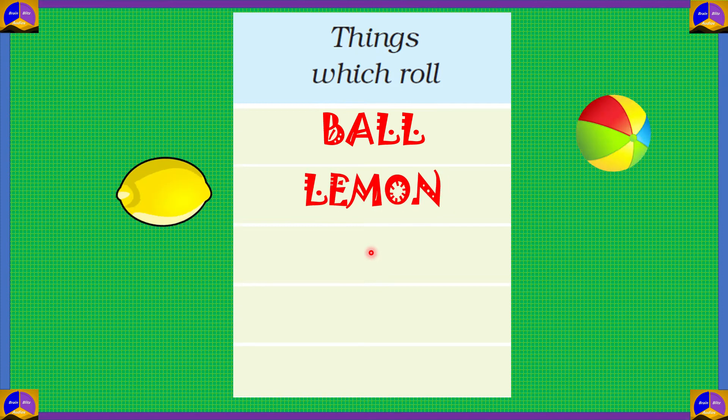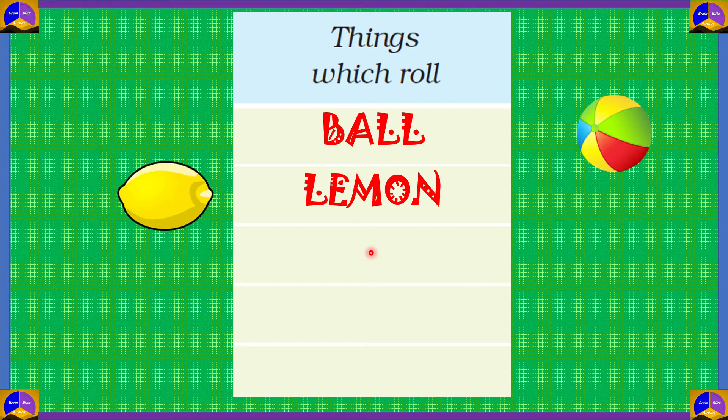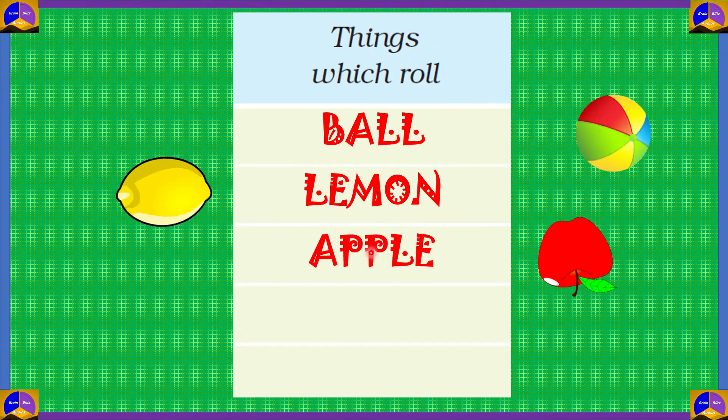Next, a lemon. A lemon is a fruit which is round in shape, so it rolls. Another fruit which rolls is apple. It has a round shape, so this also rolls.